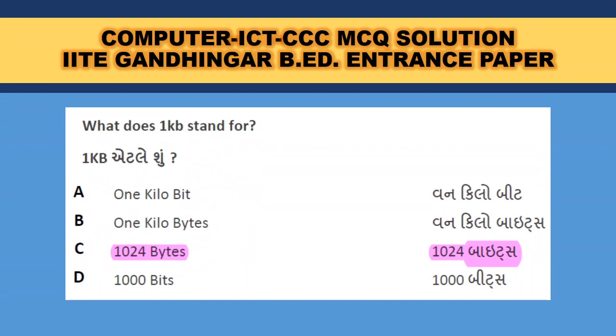What does one KB stand for? One KB is equal to 1024 bytes.